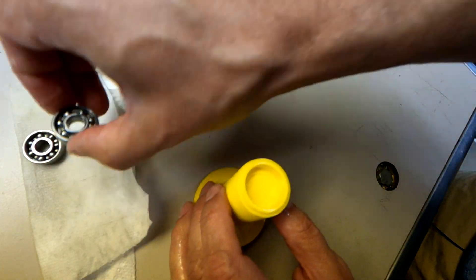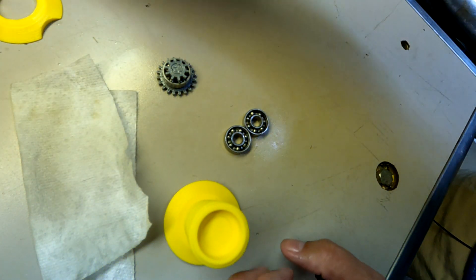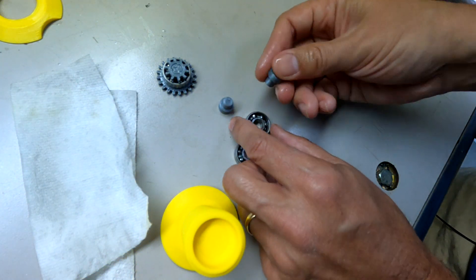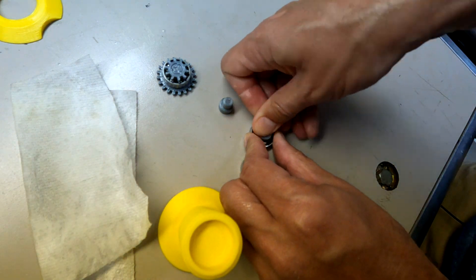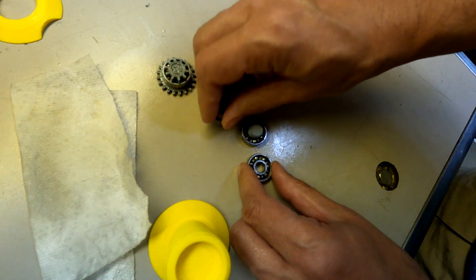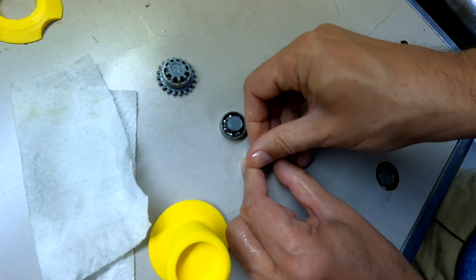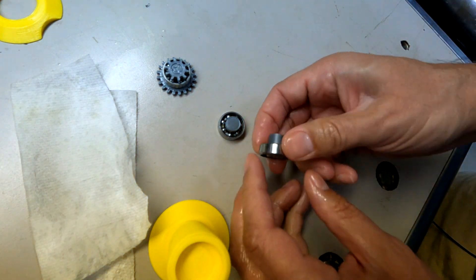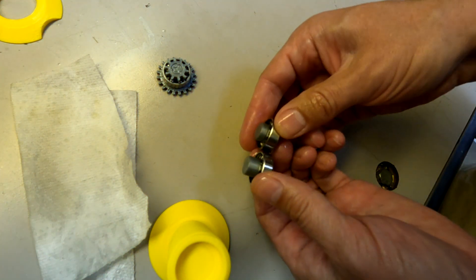The next thing we're going to do is take the other two bearings and put these little end pieces in like that. That's one. There's the other one.